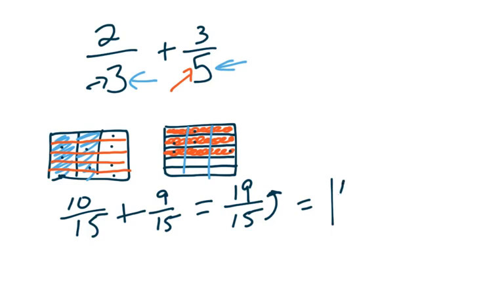Well, we don't like to keep fractions improper. So we know we can get fifteen out of nineteen. Fifteen, sixteen, seventeen, eighteen, nineteen with four left over would be our final answer.